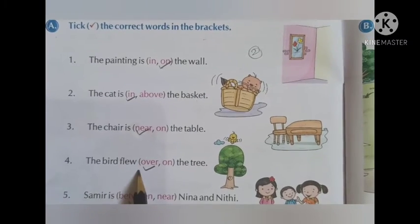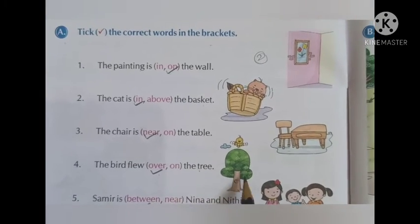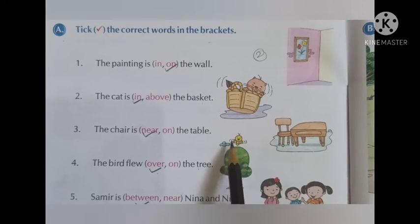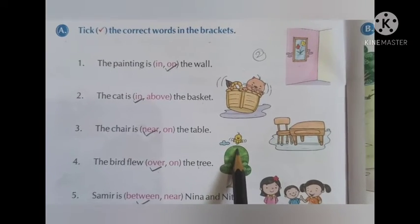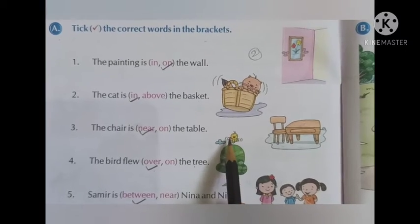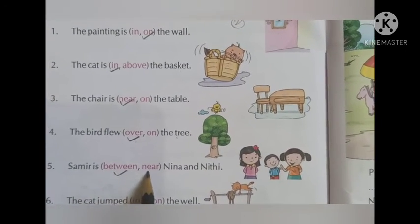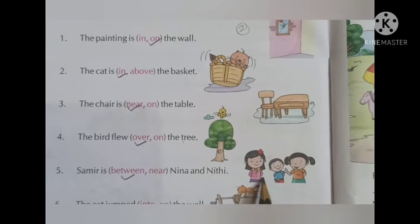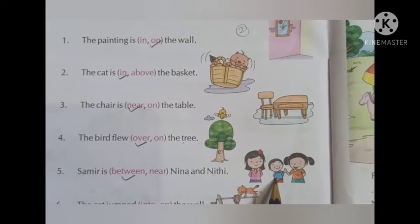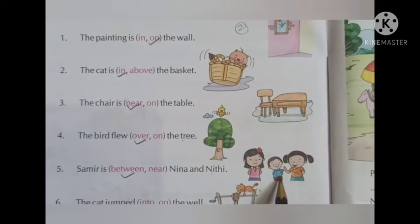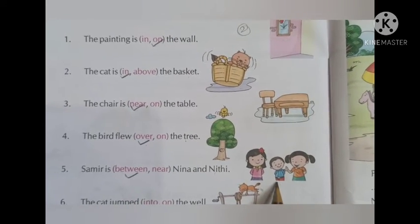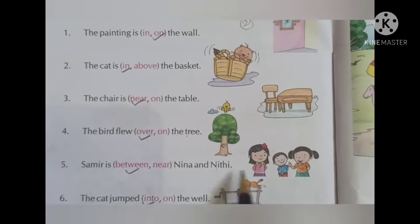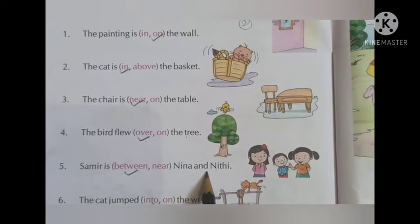The bird flew over or on the tree — the bird is flying and not touching the surface, so we say it is over. Samir is between or near Neena and Neeti — Neena is on one side and Neeti on the other, and Samir is standing between these two girls. We cannot say near because he is between two people, so Samir is between Neena and Neeti. You will solve the other sentences in the same way.